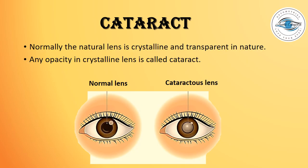Let us first know what cataract is. Normally, the natural lens in our eye is crystalline and transparent in nature, and any opacity in this crystalline lens is called cataract. Like in this photograph, we can see a normal lens in the right eye and in the left eye the lens is cataract.